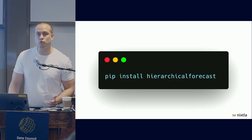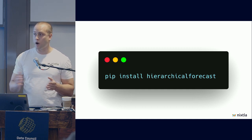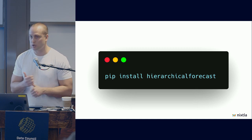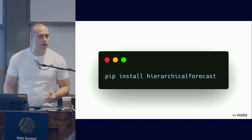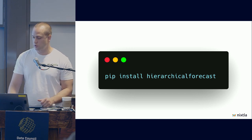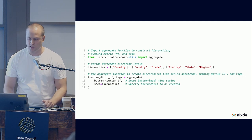The only thing that you need to do is to pip install the library, and we offer a wide variety of reconciliation methods like bottom-up, top-down, middle-out, ERM, Mint Trace, also some probabilistic ones like PermBu and Bootstrap. And how this works, and I'm going to guide you through the code, again, it's not more than 20 lines.